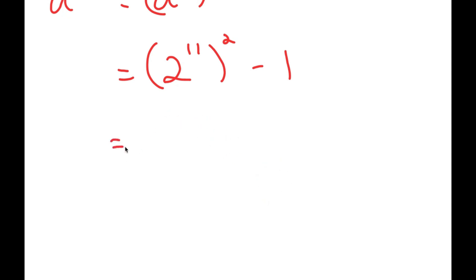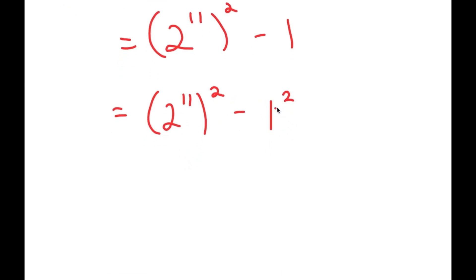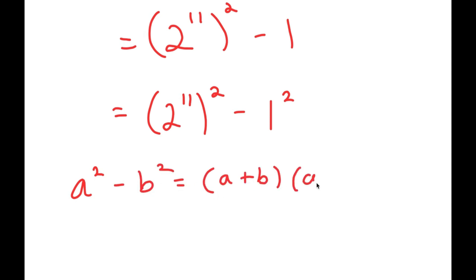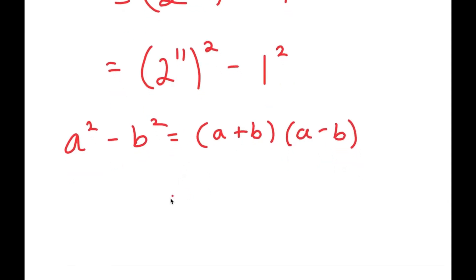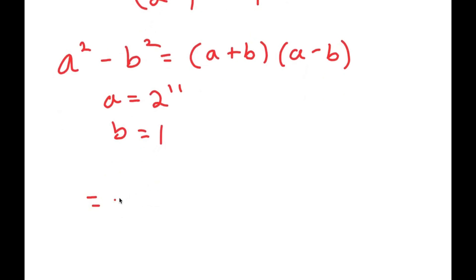Now, 1 is the same thing as 1 squared, so now I have 2 to the power of 11, to the power of 2, minus 1 squared. The reason I rewrote 1 as 1 squared is because now I can use the property a squared minus b squared is equal to a plus b times a minus b. Here, a is 2 to the power of 11 and b is 1. So now I get 2 to the power of 11 plus 1, times 2 to the power of 11 minus 1.